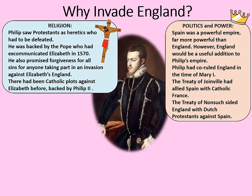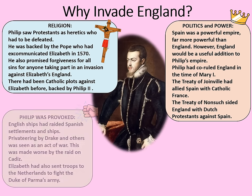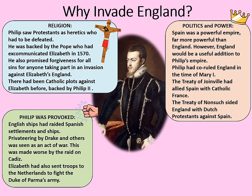The next reason is politics and power. Spain was a powerful empire, far more powerful than England. However, England would be a useful addition to Spain's empire. Philip had co-ruled England in the time of Mary I. The Treaty of Granville had allied Spain with Catholic France, while the Treaty of Nonsuch sided England with the Dutch Protestants against Spain. Philip was also provoked — English ships had raided Spanish settlements in the New World, and privateering by Drake and others was seen as an act of war. This was made worse by the raid on Cadiz in 1587, and Elizabeth had sent troops to the Netherlands to fight the Duke of Parma's army.